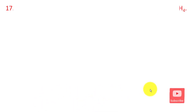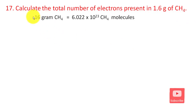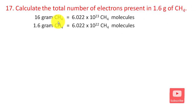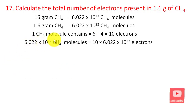The next question: calculate the total number of electrons present in 1.6 grams of sulfur (S₈). 1 mole of sulfur is 16 grams. From 1.6 grams, the number of S₈ molecules is (6.022 × 10²³ × 1.6) / 16. Each sulfur atom has 16 electrons, giving approximately 1.0 × 10²³ electrons.